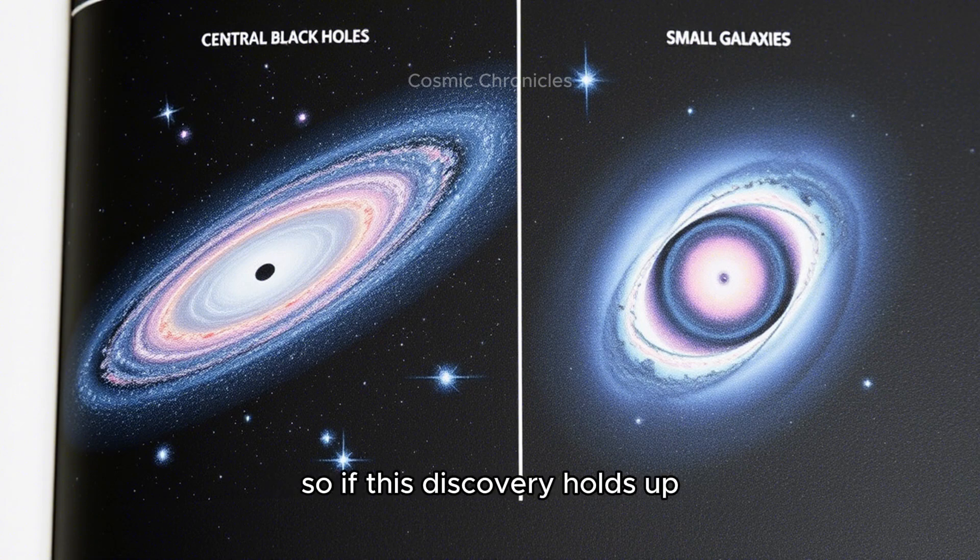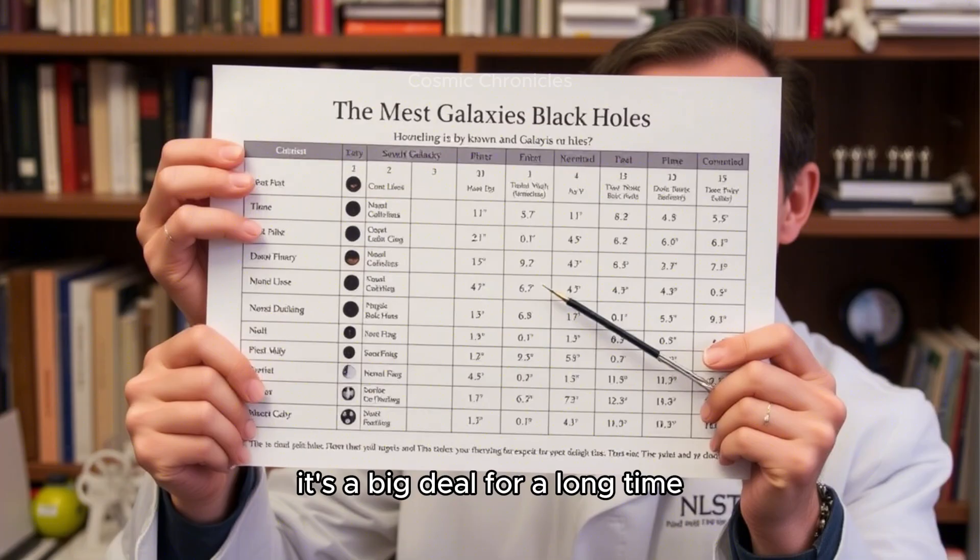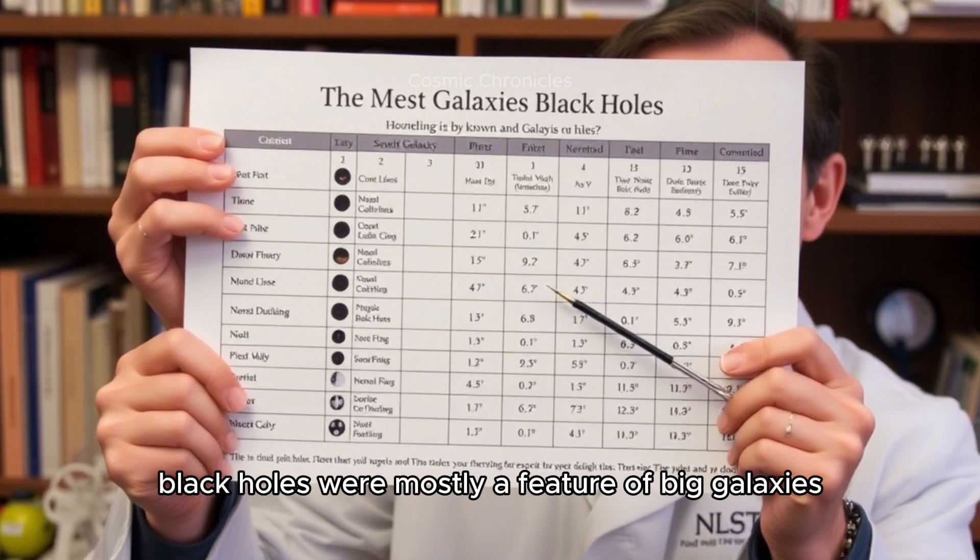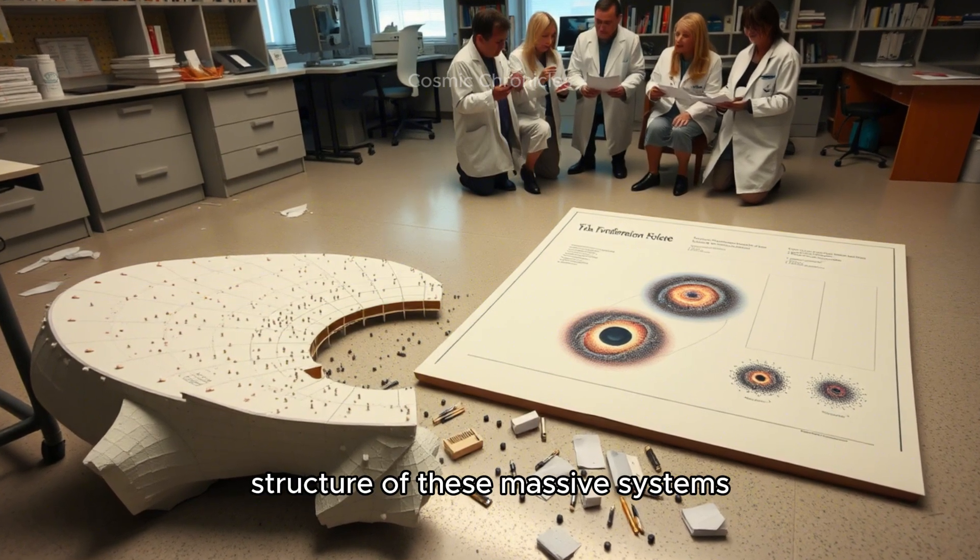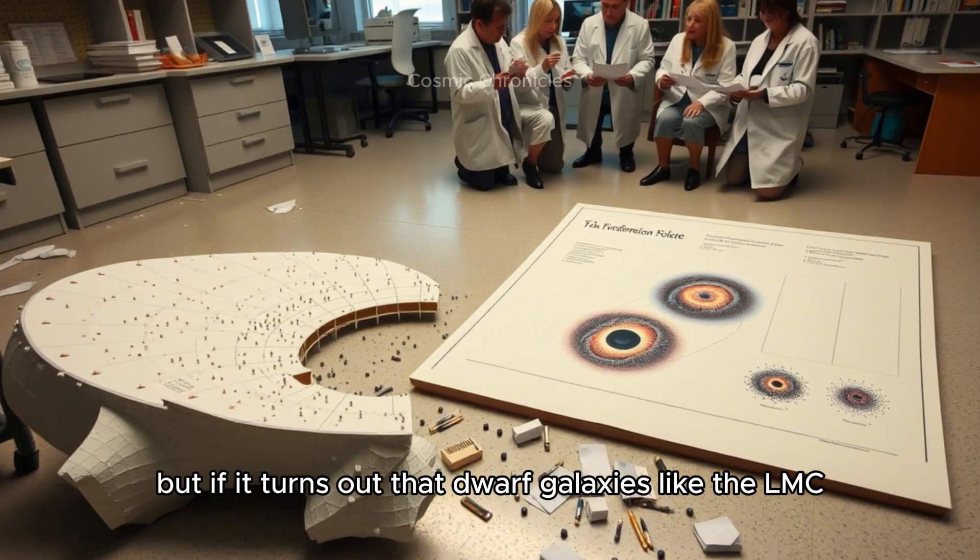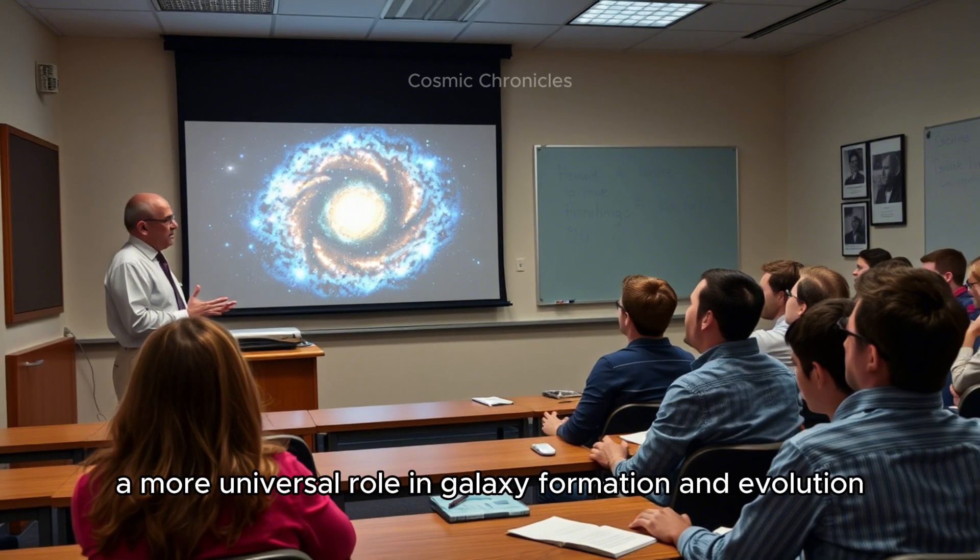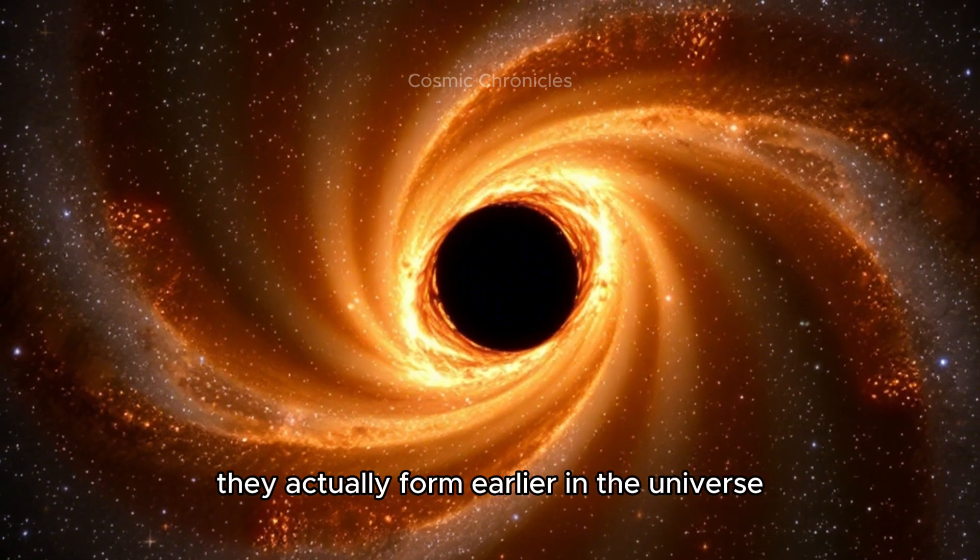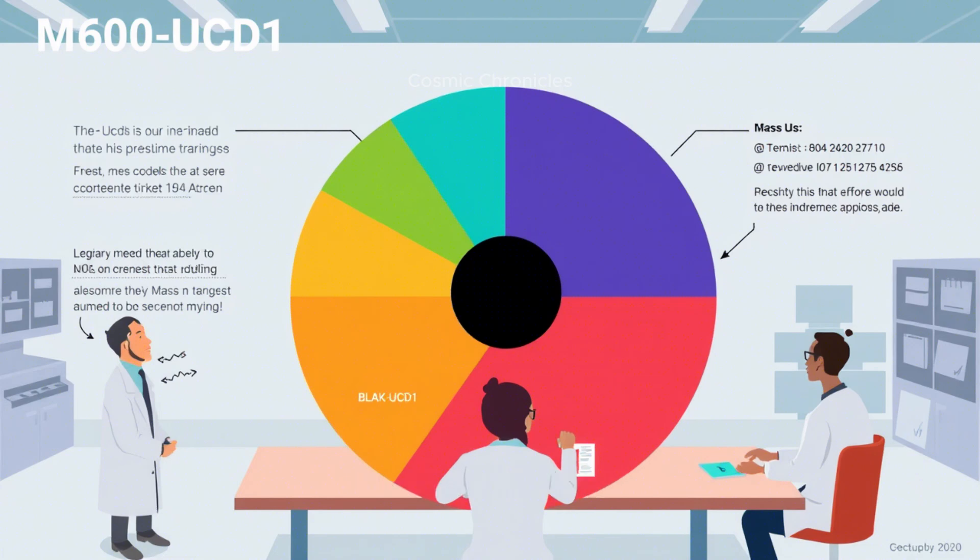If this discovery holds up, and it sounds like the evidence is pretty strong, what are the implications for how we understand galaxies and how they evolve? For a long time, our models of how galaxies form and change over time pretty much assumed that supermassive black holes were mostly a feature of big galaxies - they helped regulate how stars were born and they influenced the overall structure of these massive systems. But if it turns out that dwarf galaxies like the LMC can also host these giant black holes, then it suggests that they could play a much bigger, more universal role in galaxy formation and evolution across all different sizes. It might mean that the initial seeds of these black holes actually form earlier in the universe, in a much wider range of environments than we currently understand.